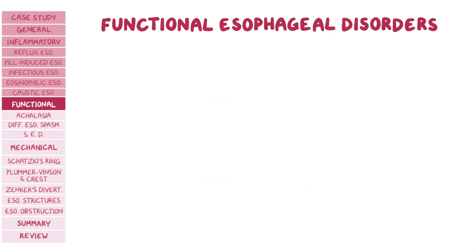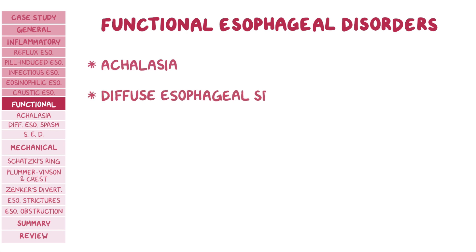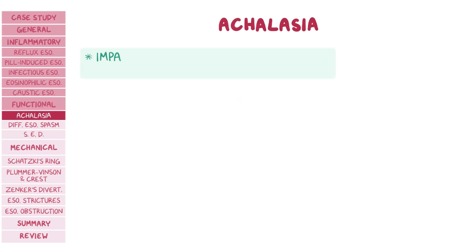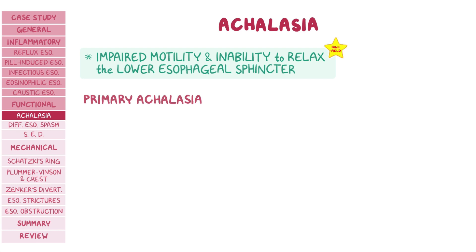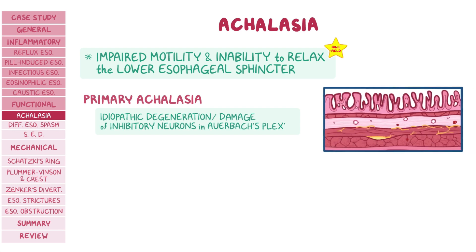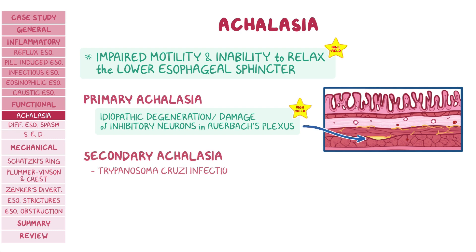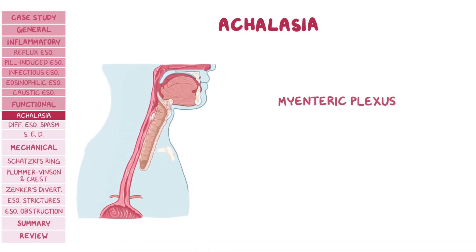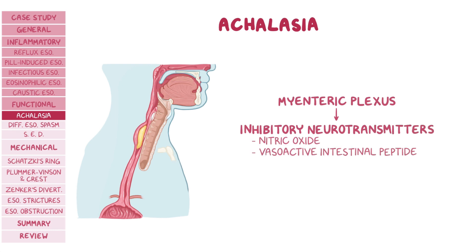Moving on to functional esophageal conditions, which include achalasia, diffuse esophageal spasm, and scleroderma esophageal dysmotility. Achalasia is when there is impaired esophageal motility and inability to relax the lower esophageal sphincter. The most common cause of primary achalasia is idiopathic degeneration or damage of the postganglionic inhibitory neurons in the myenteric or Auerbach plexus of the esophagus. Normally, these neurons release inhibitory neurotransmitters like nitric oxide and vasoactive intestinal peptide, which relax the lower esophageal sphincter.